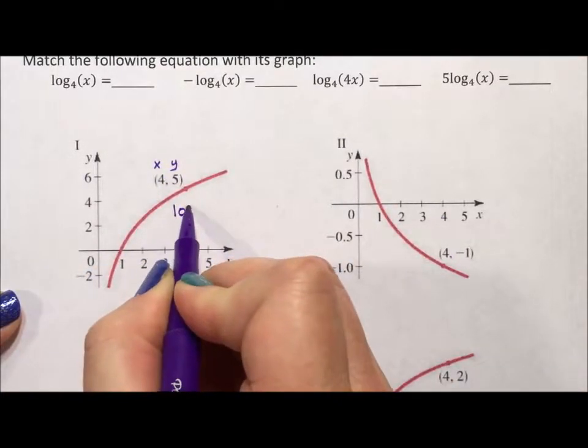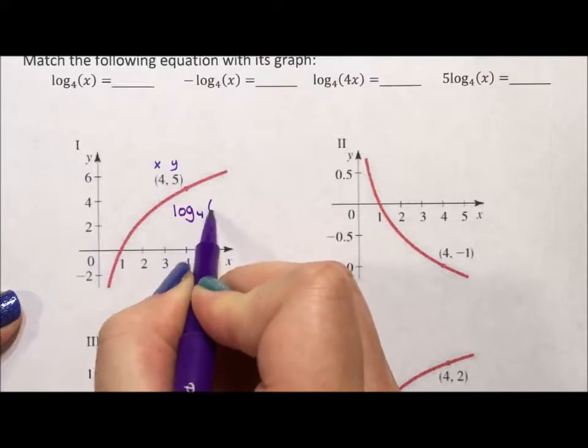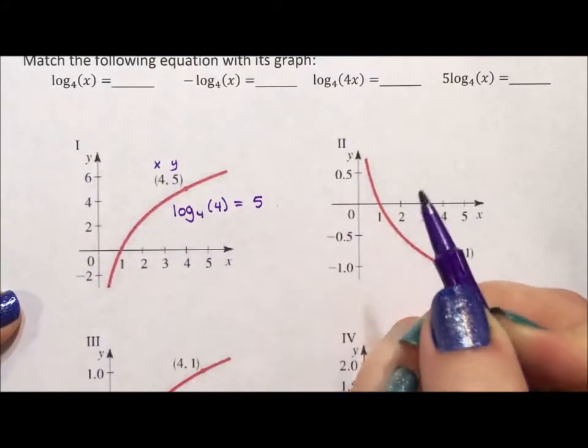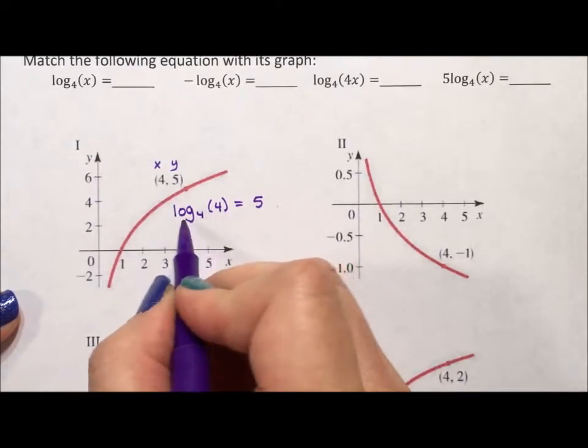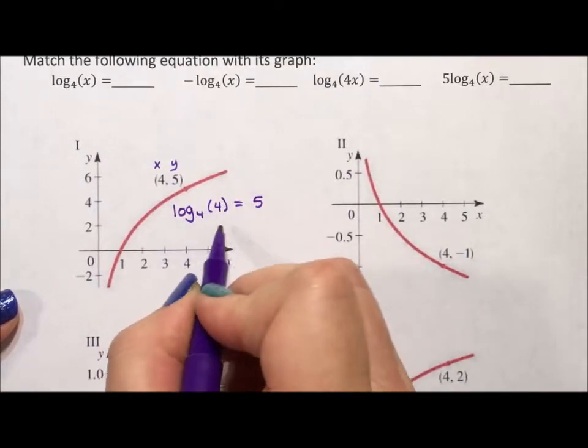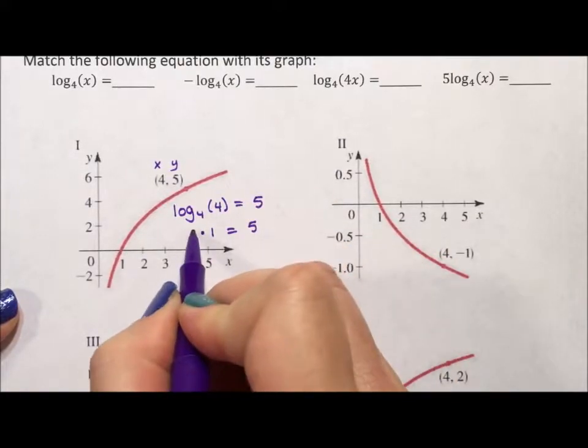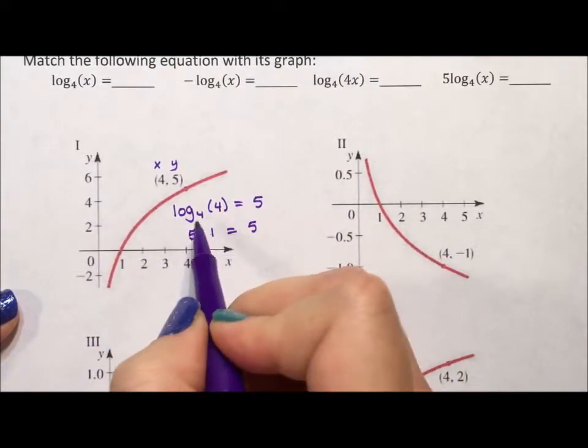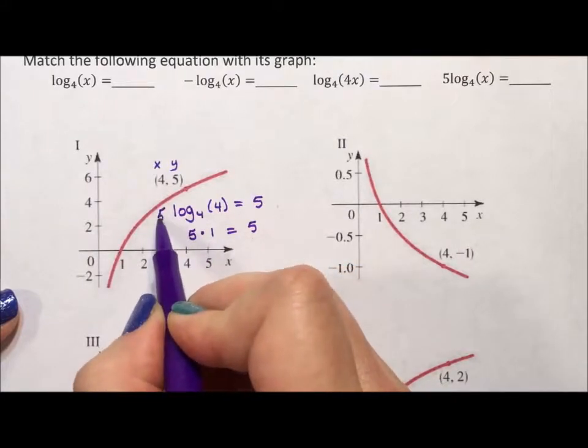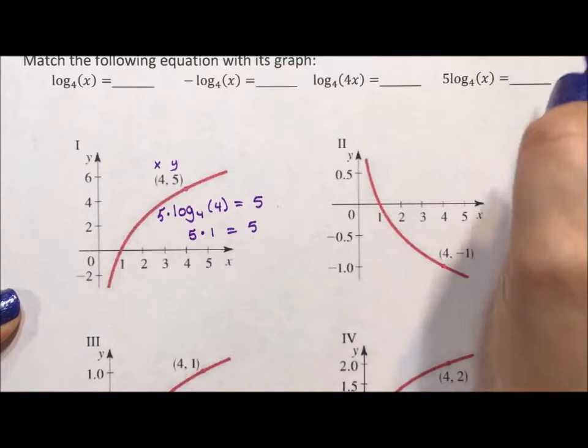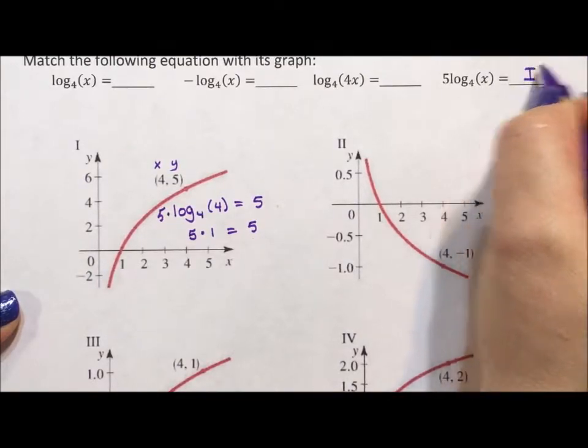So log base 4, they're all log base 4, of 4 equals 5. Well it doesn't. Log base 4 of 4 is 1 because 4 to the power of 1 is 4. So we have 1 equals 5, which is not true unless we multiply this by 5. So we need 5 times log base 4 of x, which is right here. So this one becomes our first graph.